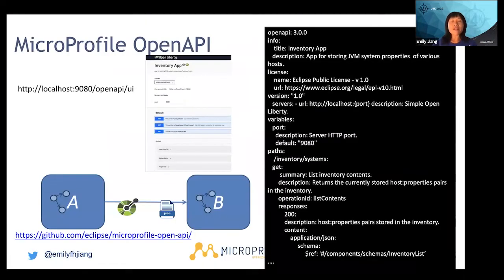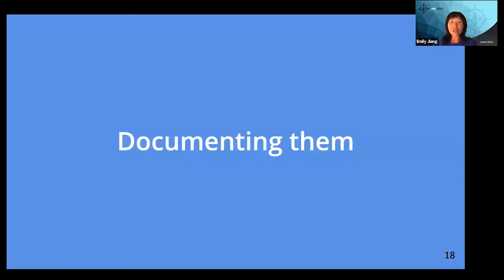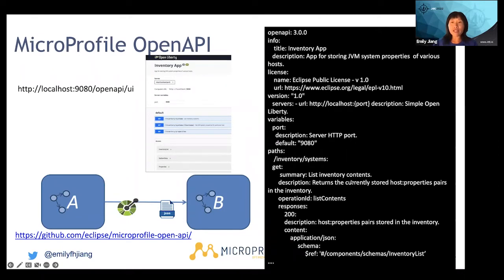For documentation, we use MicroProfile OpenAPI. This directly adopts the OpenAPI specification, and the implementation uses Swagger as output. The output is available at the host port slash openapi endpoint. In OpenLiberty, we also have an additional endpoint slash UI where we integrate Swagger UI, so you can directly invoke the microservices or cloud native application at any endpoint.